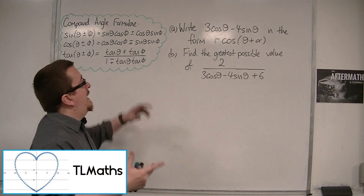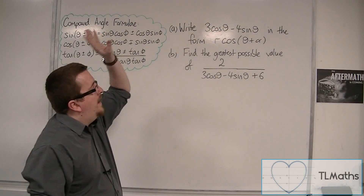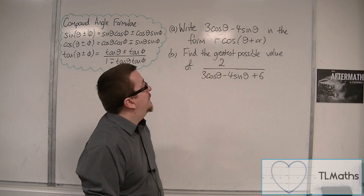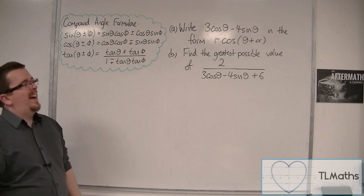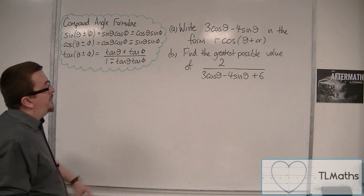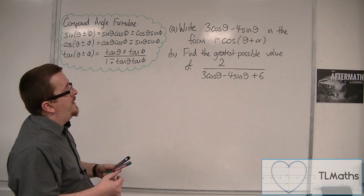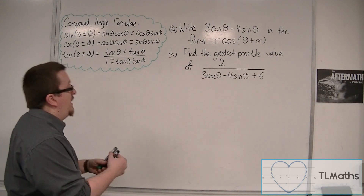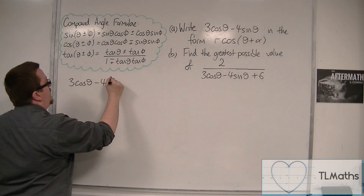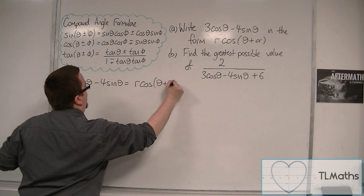In this video I'm going to look at another problem of expressing a sum of trig functions in a format using the compound angle formulas, followed up by a tricky thought problem for part B. So let's focus on part A: write 3cosθ minus 4sinθ in the form r·cos(θ + α). So I'm going to write 3cosθ minus 4sinθ equal to r·cos(θ + α).